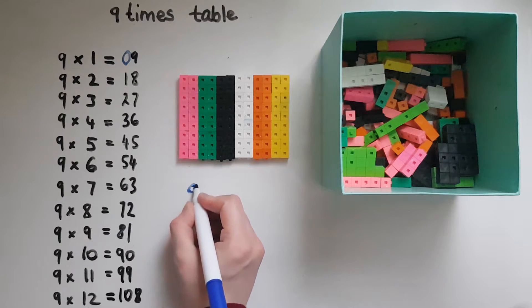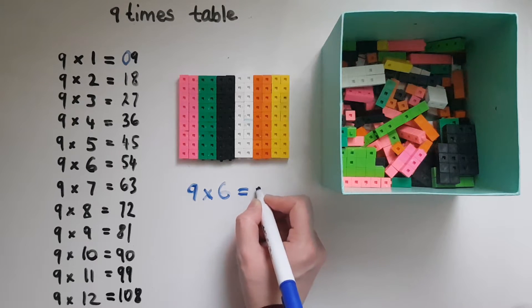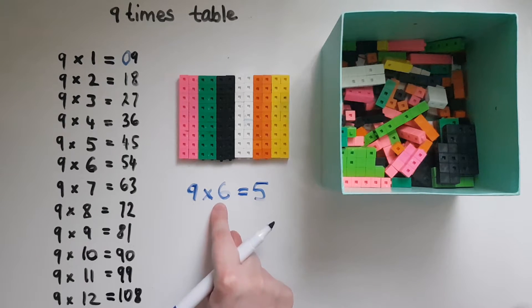So if I do 9 times 6, the answer is going to begin with 5, which is 1 less than 6.